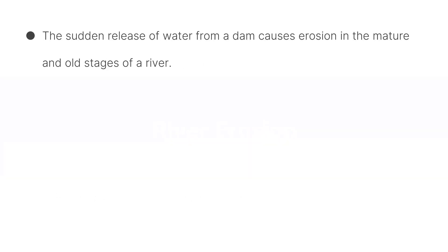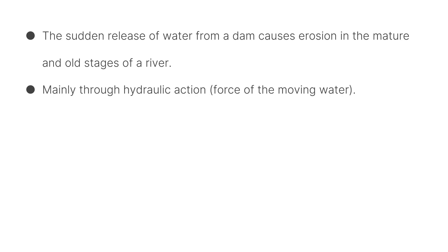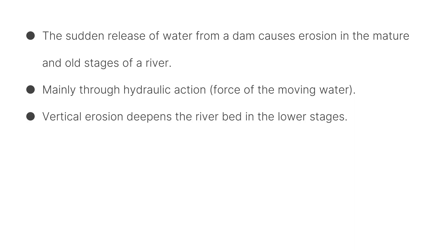River erosion happens because you get a sudden release of water from the dam, and that causes erosion to happen in the mature and old stages, or the middle and lower stages. It's mainly through hydraulic action, which is the force of moving water — make sure to put that in because you get marks for explaining what these processes actually mean. Vertical erosion, meaning downwards, deepens the riverbed in the lower stages, and that's not a good thing.